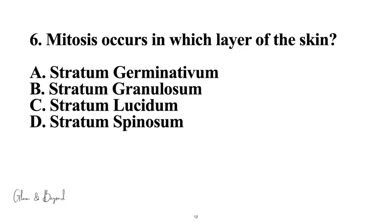Number six: mitosis occurs in which layer of the skin? A, stratum germinativum; B, stratum granulosum; C, stratum lucidum; D, stratum spinosum. The answer is A, stratum germinativum. You may also know it as the basal layer.